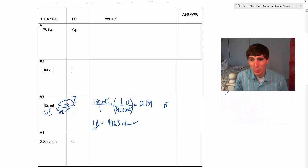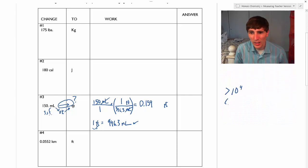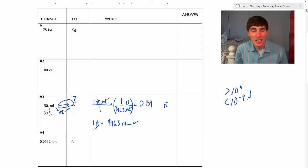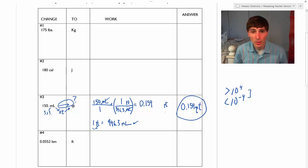Really quick note: if my number is greater than around 10 to the 4th, or less than 10 to the negative 4th, you're going to want to put those numbers in scientific notation if they're really big — say 50,000 — or really small, like 0.0000001. This number is not too small, so I'm just going to leave it at 0.159 quarts. I did round that answer. I do want you to show units canceling for each one of these problems, and you need to round to the right number of sig figs.